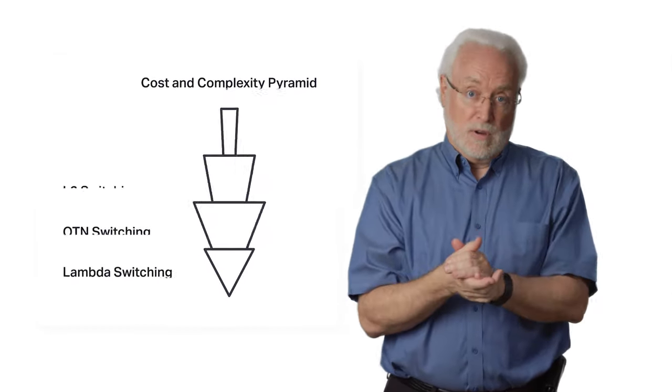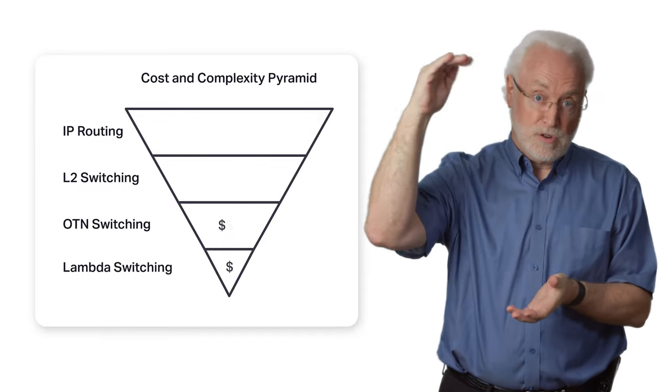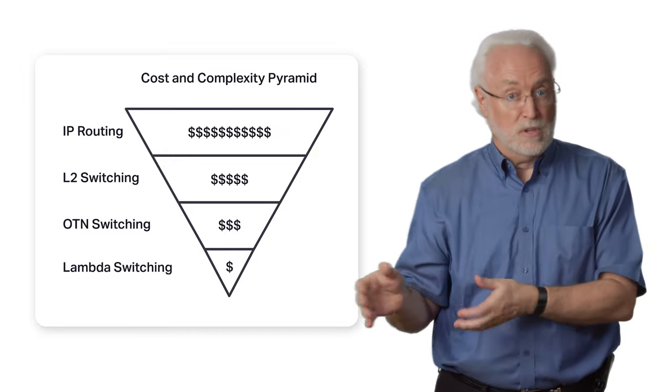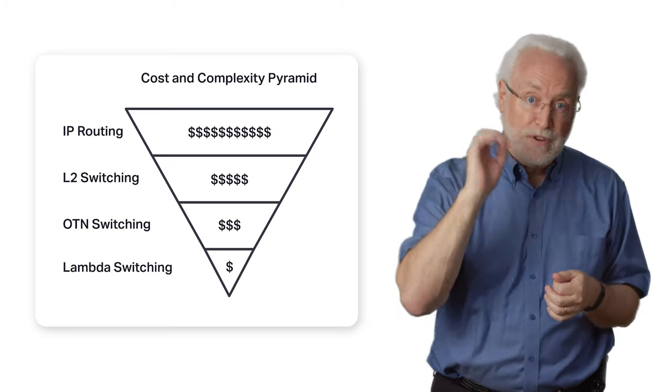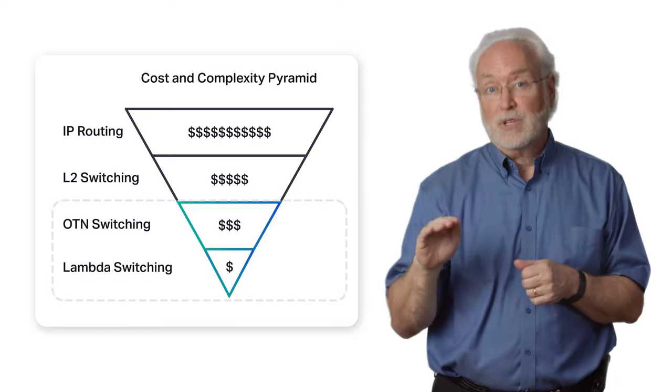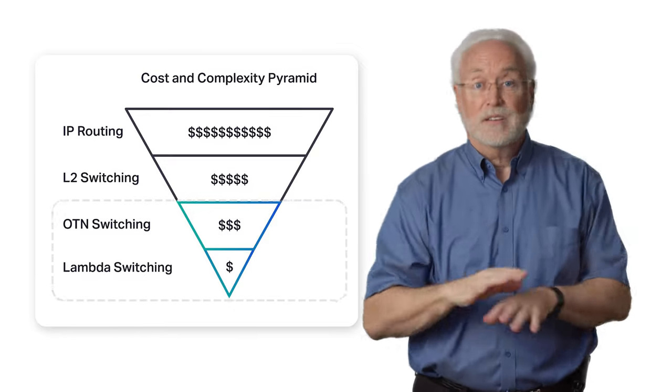What we've captured here is what is called a cost and complexity pyramid. As you go to higher layers in your network, the number of interfaces, the associated data plane and control plane touch points, all serve to increase cost and complexity. To make the most efficient use of network resources, traffic needs to stay optical as long as possible. This generally minimizes cost, complexity, and latency simultaneously.